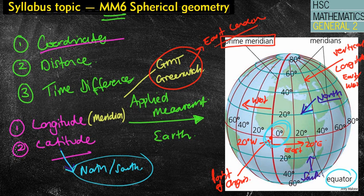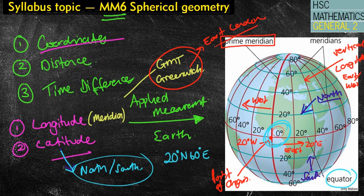We start at zero degrees, and that starting point is quite important. When writing coordinates, we do the north or south version first. For example, if I said 20 degrees north and then 60 degrees east, I first go to the 20-degree north latitude line, then to the 60-degree east longitude line — and that intersection is my location or coordinate.